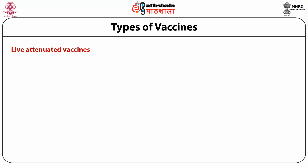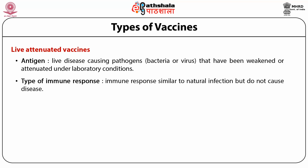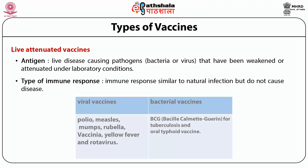Live attenuated vaccines consist of live disease-causing pathogens — bacteria or viruses — that have been weakened or attenuated under laboratory conditions. The immune response they generate is similar to natural infection; the only difference is that they do not cause any disease. Both humoral and cell-mediated immune responses are generated. Viral vaccines in this category include polio, measles, mumps, rubella, yellow fever, and rotavirus. BCG for tuberculosis and oral typhoid vaccine are bacterial live attenuated vaccines.